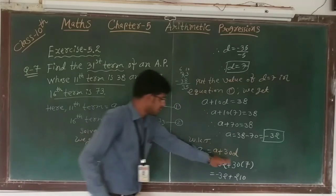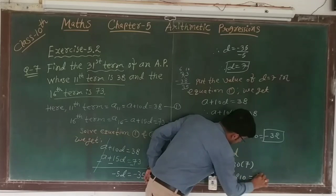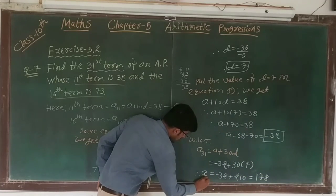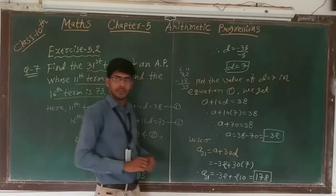So 210 minus 32, our answer is 178. Therefore, a31 is equal to 178.